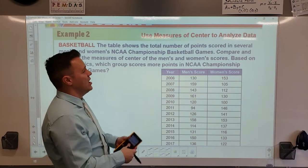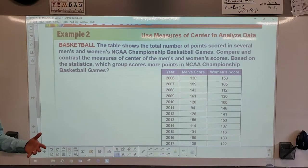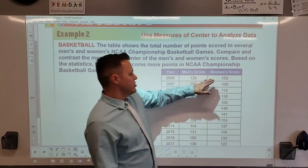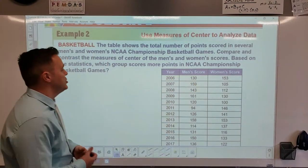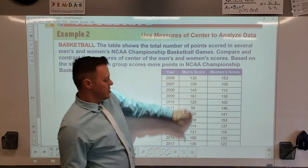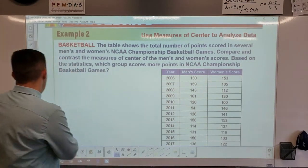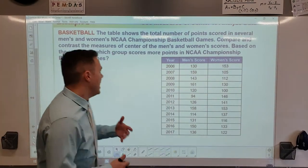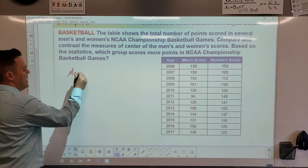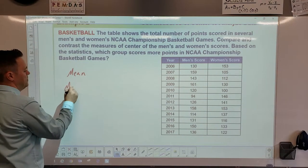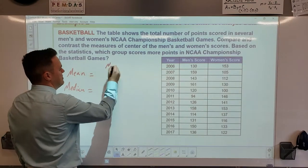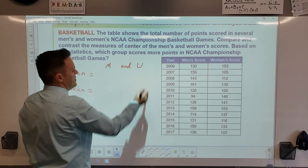Now we're going to do a larger analysis. You're going to compare men's and women's scores for the NCAA championship basketball games. Here are the men's scores versus the women's scores. This involves a lot of numbers. For this problem I'm not asking you to find the mode — just find the mean and the median for each group.